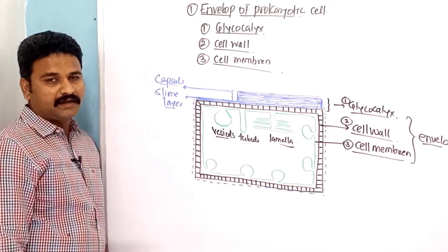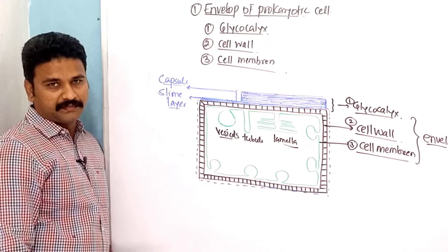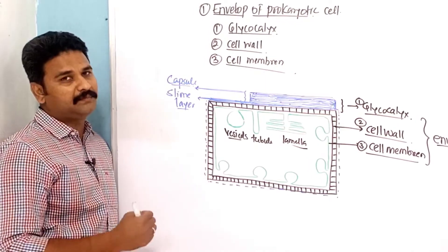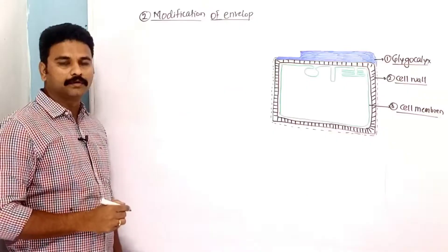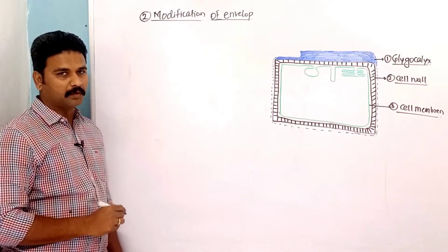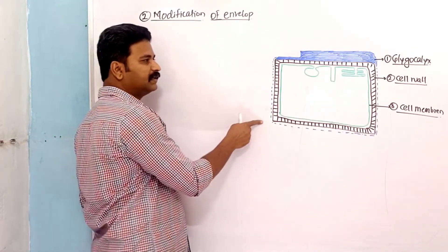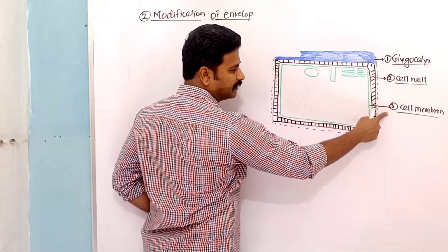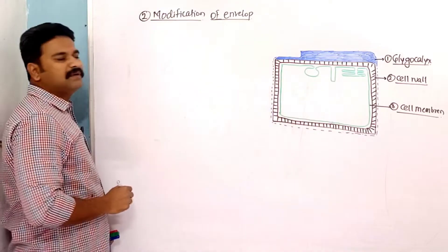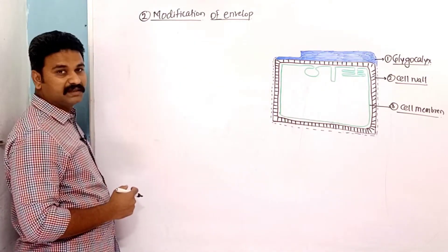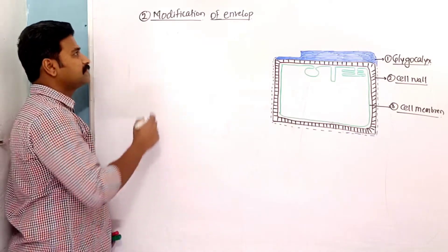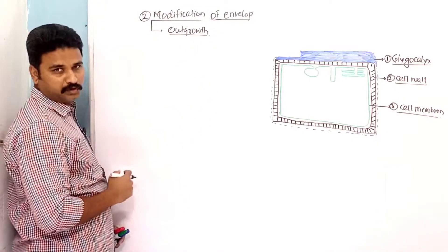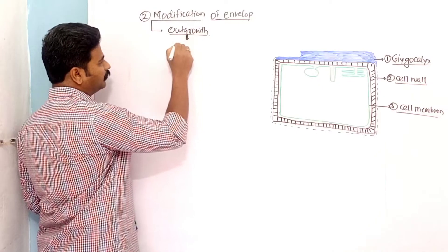Now the next part is the modifications of this envelope. There are certain structures which protrude out of this envelope to give rise to certain hair-like or tube-like projections. When the cell envelope is modified, some structures are projected outside. These outgrowths are called cellular appendages.